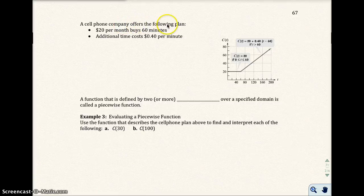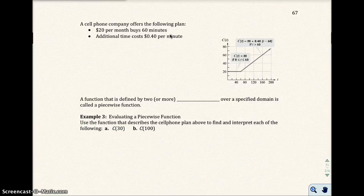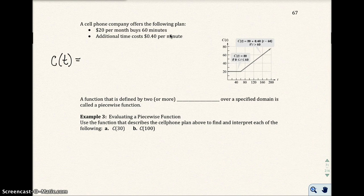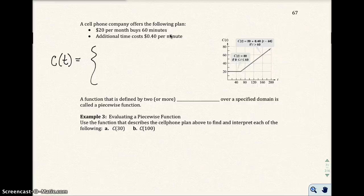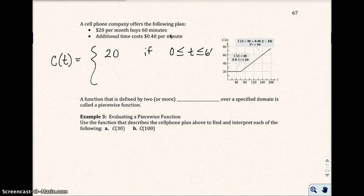A cell phone company offers the following plan: it costs you $20 per month for 60 minutes, and additional time costs $0.40 per minute. So I have a function where the cost of your cell phone is based on how much time you use. The cost is going to equal $20 if you talk between 0 and 60 minutes. That's your function, that's what it will cost.